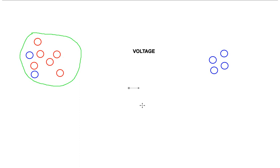Voltage is the force created when you pull electrons away from a material. The force trying to get those electrons to travel back to the material is called voltage, and the greater the imbalance of charge, the greater that pressure or voltage is. Voltage is electrical pressure, and the purpose of electrical pressure is to move electrons. The left-hand side is positive, the right-hand side is negative. If we want those negative electrons to flow easily back to the positive left-hand side, we need to place between the two a conductor.